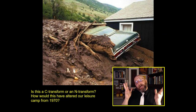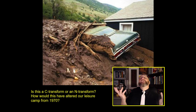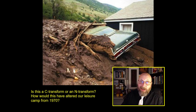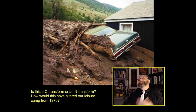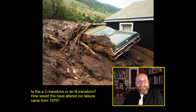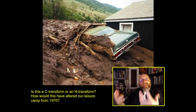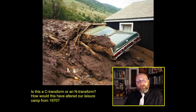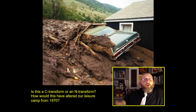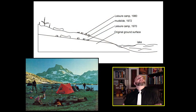For instance, a mudslide. Here is a mudslide in Alaska from the 1980s — that car is gone. Is this a C-transform or an N-transform? Almost certainly this is an N-transform. The side of a hill was probably weakened by rain, gave way, and buried this car, a driveway, and a portion of a house with a thick layer of mud. Let's say this happened to our recreational campsite from Thousand Island Lake — our recreational campers were there in 1970, and a few years later a mudslide buried the remains of that camp.